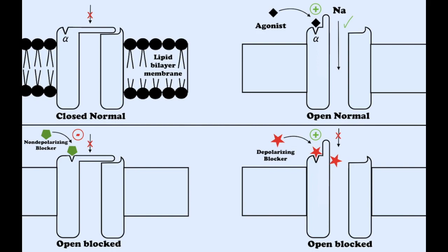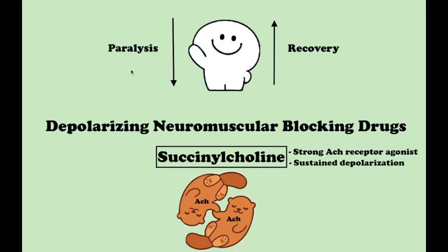Paralysis occurs in the following order: first, the muscles of the periorbital, jaw, face, throat, neck, and fingers weaken. Then the muscles of the limbs and torso, and finally the intercostal muscles and the diaphragm — as a result of which breathing stops. Recovery of muscle tone occurs in the opposite order: patients first start to breathe spontaneously, and after that the facial muscles, muscles of the jaw, face, neck, and throat start to move.